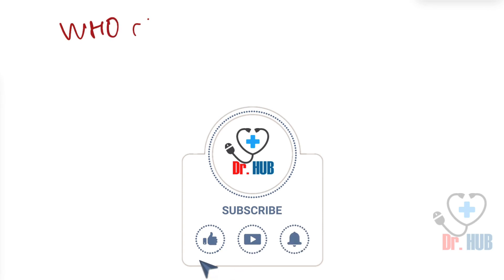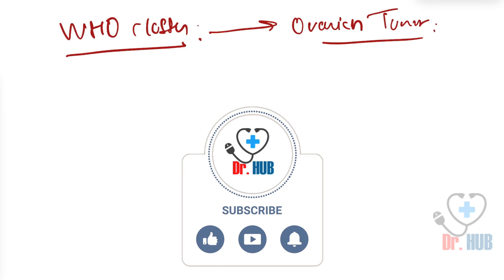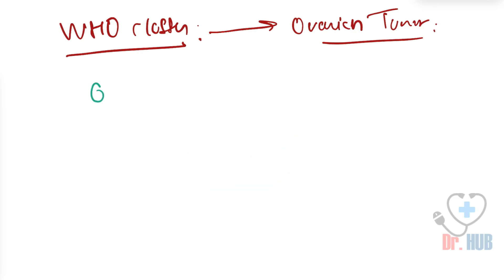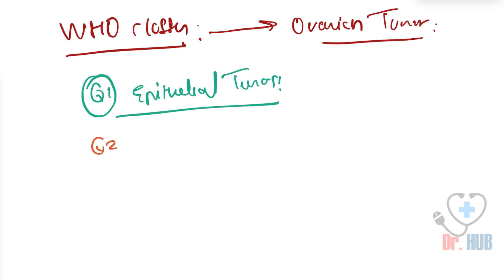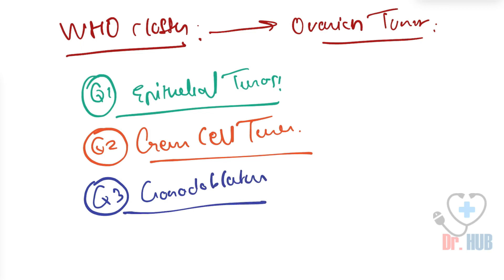Today we are going to look at the WHO classification of ovarian tumors. To begin with, some questions: the first question is what are the epithelial tumors, the second is what are the germ cell tumors, and the third will be what are the gonadoblastoma. We'll be answering all these questions in the video and learning in detail.